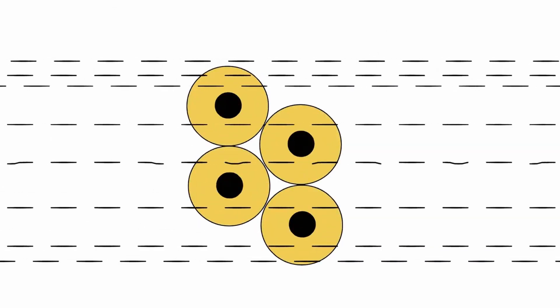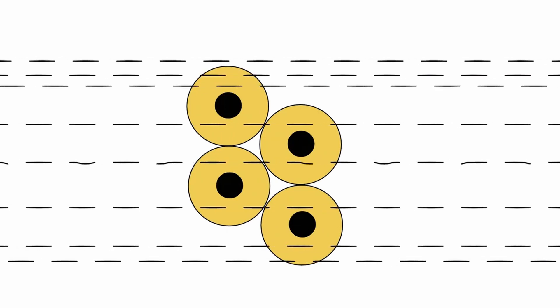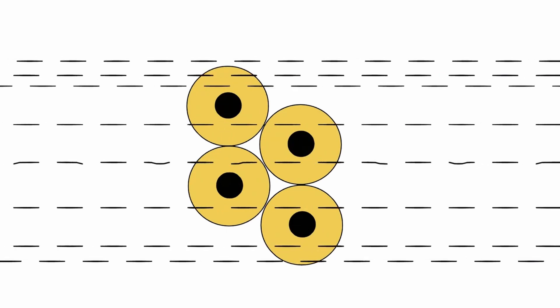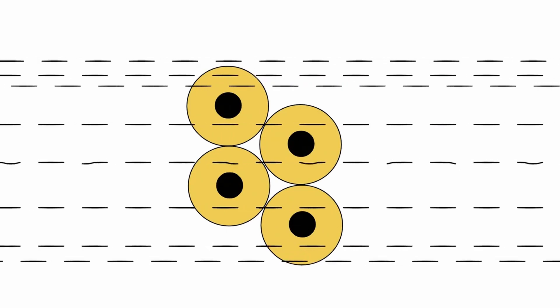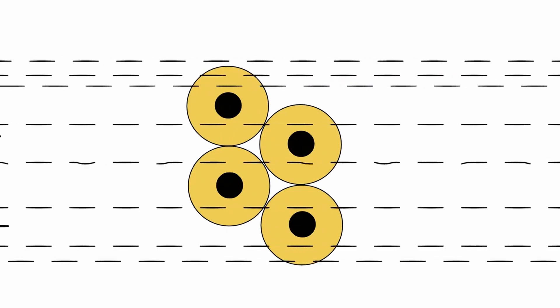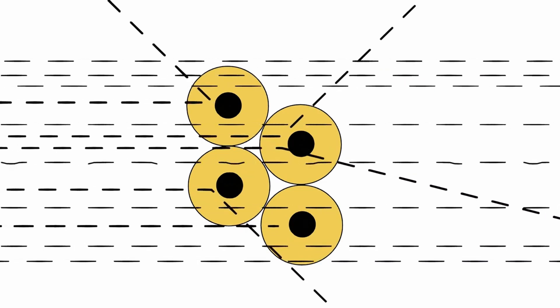However, these positively charged particles at the atom center must be exceedingly small, as most alpha particles simply pass through without deviation.